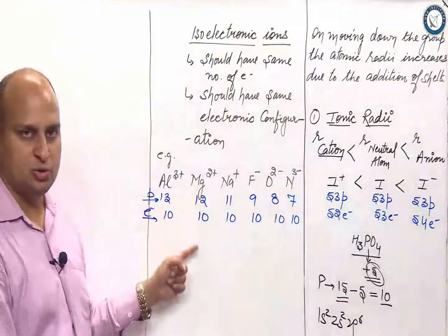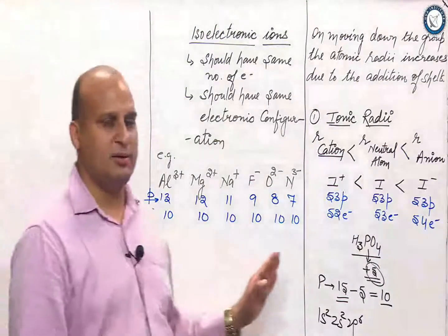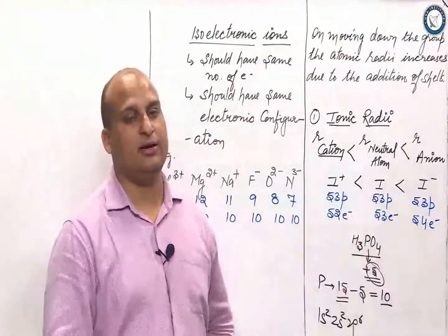Magnesium has got 12, loses 2, so become 10. So, they have got the same electrons, but at the same time same electronic configuration.